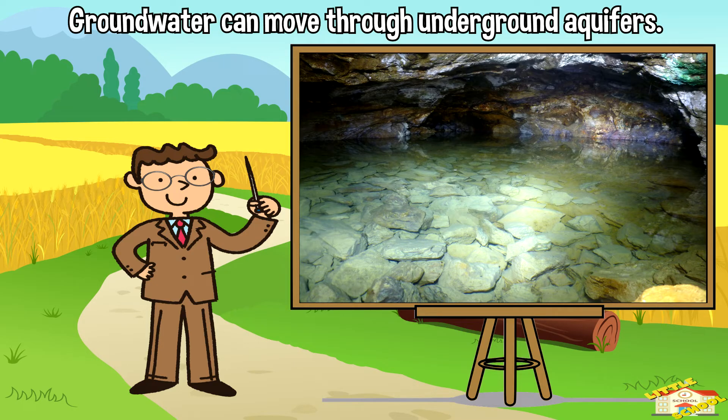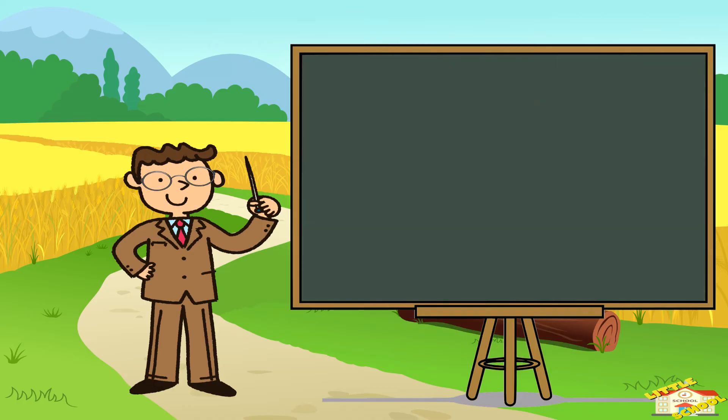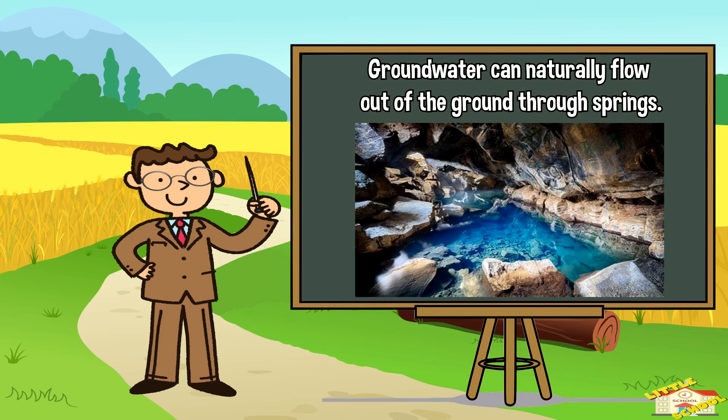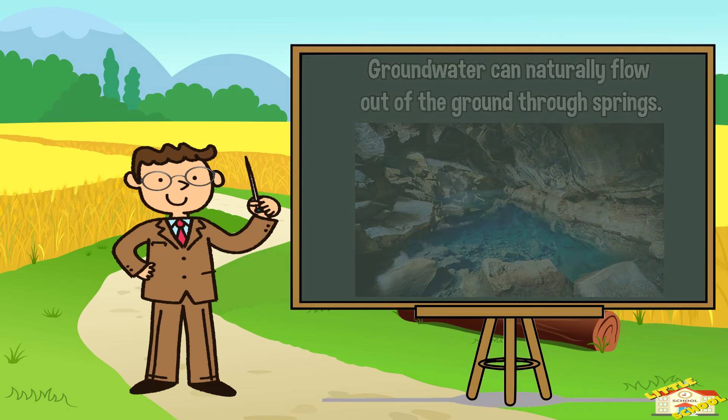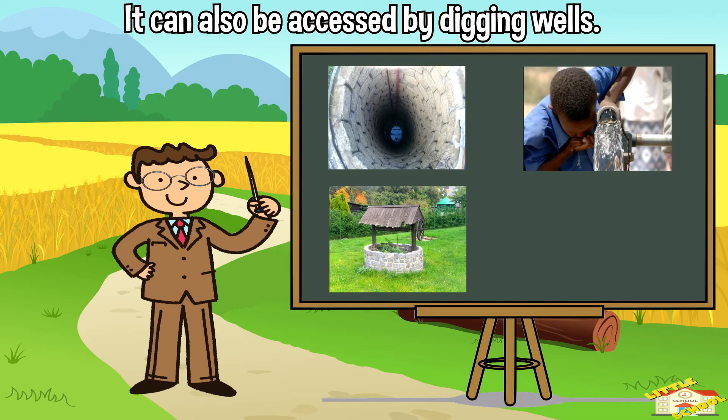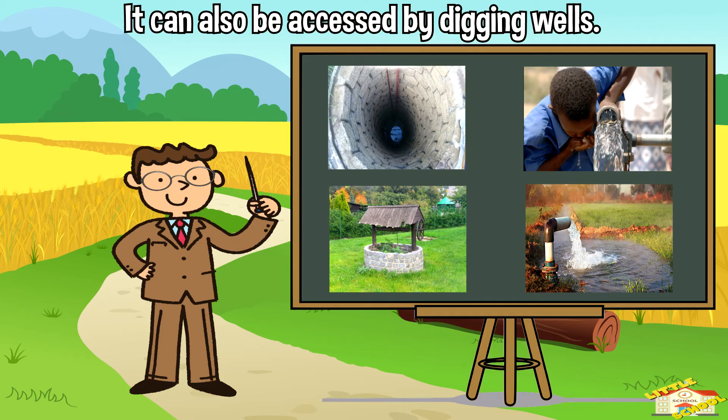Springs and wells: Some of this groundwater can naturally flow out of the ground through springs. It can also be accessed by digging wells, which provide us with a source of fresh water for drinking, irrigation, and other purposes.